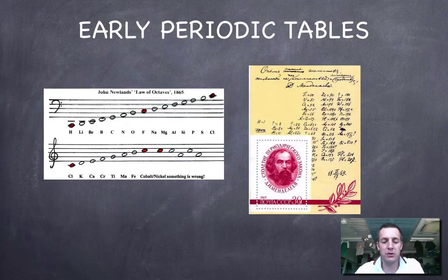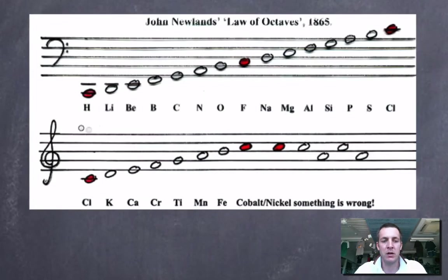For example, Newlands in his periodic table was talking about these laws of octaves. In other words, every eight elements he found that there was some repetition. So for example, if he arranged them in terms of atomic weight, fluorine and chlorine would have similar chemical properties, and so would every eighth element. He was calling this the law of octaves because there was a repetition every eight elements.